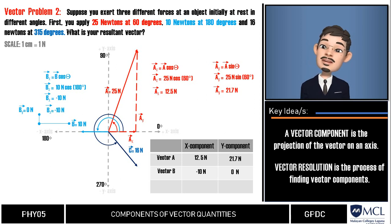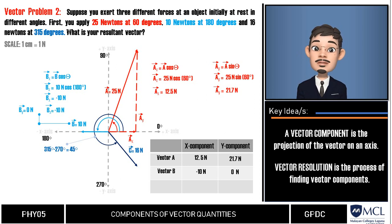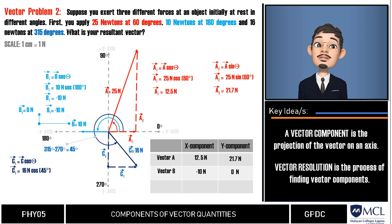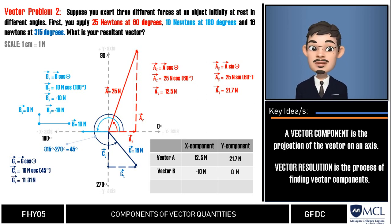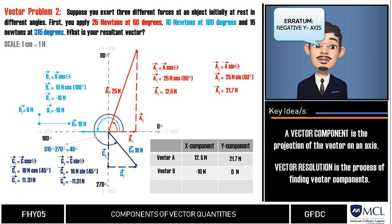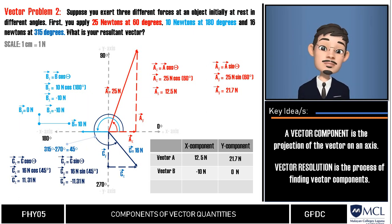Vector C lies at 315 degrees, between the positive x-axis and the negative y-axis. We find the reference angle by subtracting 270° from 315°, giving 45 degrees. We plot the x-component of vector C along the positive x-axis and the y-component along the negative y-axis. Using the formula: x-component = 16 N × cos 45° = 11.31 newtons. The y-component = 16 N × sin 45° = 11.31 newtons, but since it lies on the negative y-axis, we apply a negative sign: −11.31 newtons.